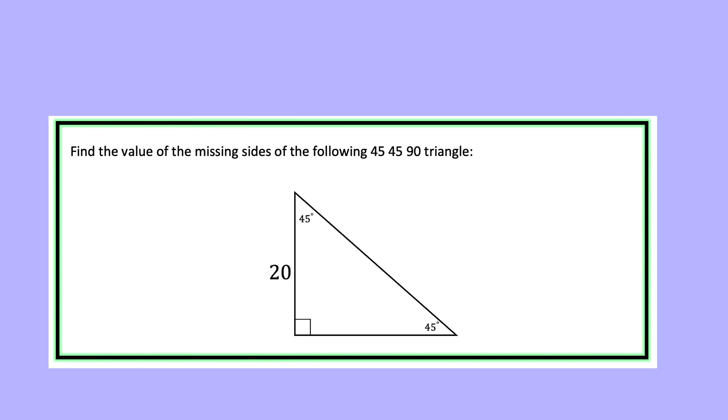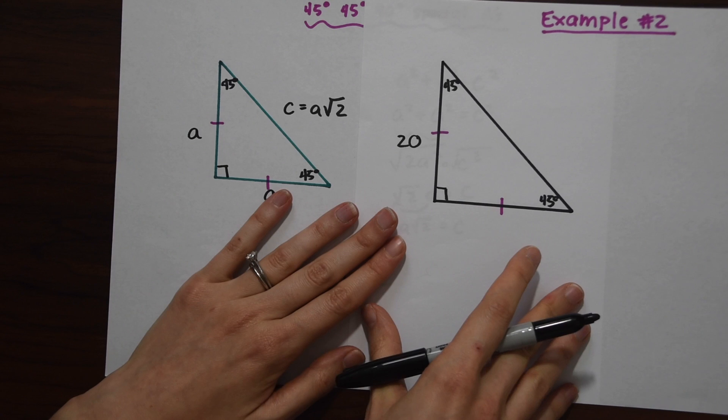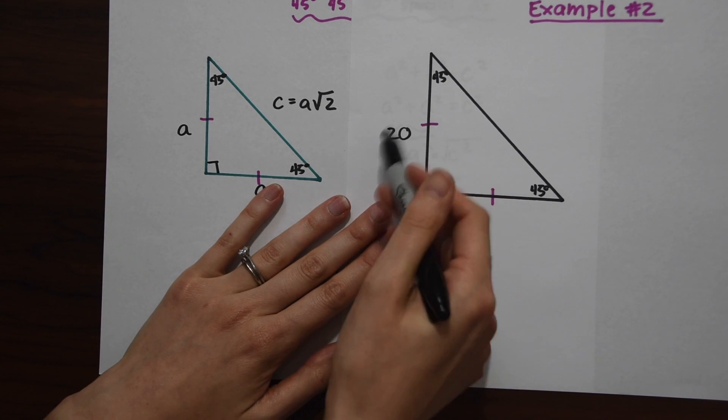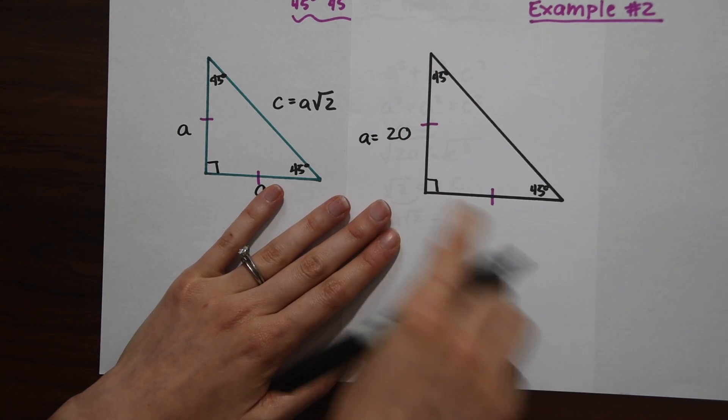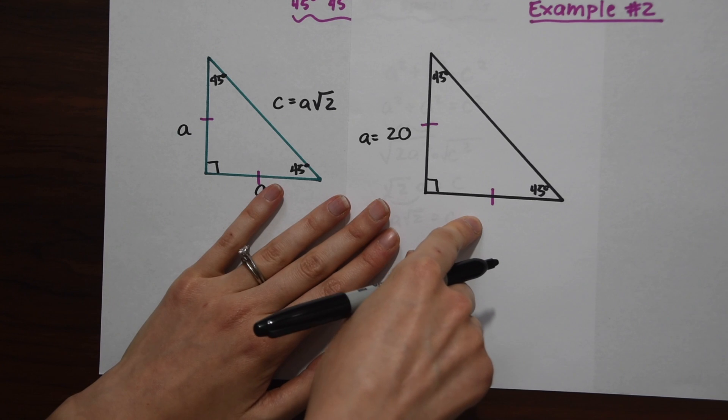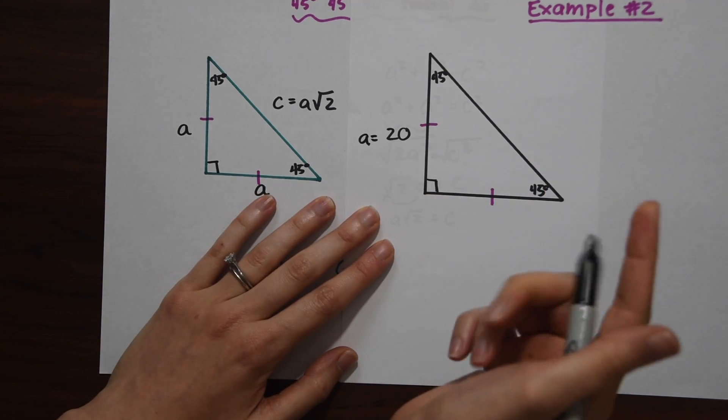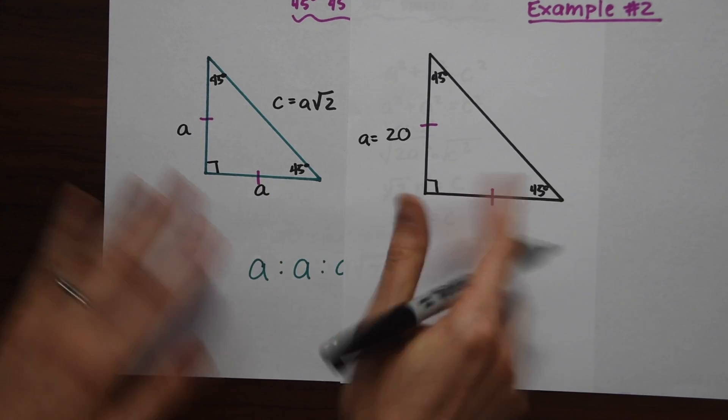For the next example, it's a very similar question, but this time we're given the value of the leg on the other side. We're given that a equals 20 on this side and we need to find the other missing side values. To answer this we're just going to do the same thing.